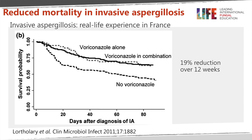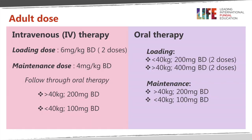So if you've diagnosed invasive aspergillosis, treating initially with voriconazole is the right thing to do, assuming there are no contraindications such as drug interactions. The intravenous dosing requires two loading doses and then a maintenance dose of four milligrams per kilogram.